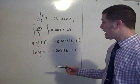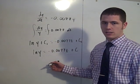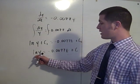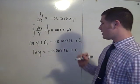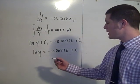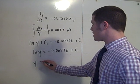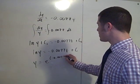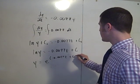So this is good. We should then exponentiate both sides. So keep these as powers on e. So e to the natural log y is e to the negative 0.0077t plus c. So I get y equals e to the negative 0.0077t plus c.